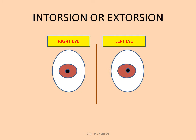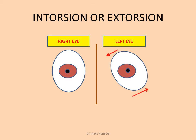Now, this is the side where we get confusion. For simplicity, I am only discussing the left eye and not discussing the right eye at all at this time. Intorsion — when the upper pole moves medially, will you call it intorsion? And at the same time, the lower pole moves outwards — will you call it extorsion? So, is this intorsion or is it extorsion?